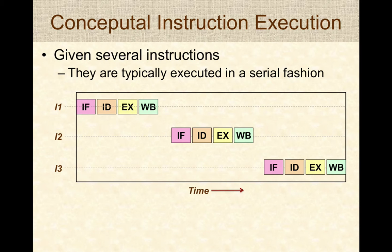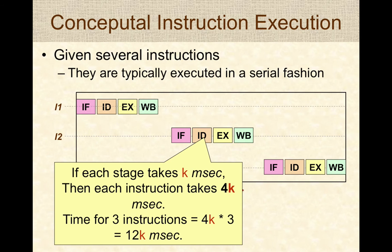If each stage takes k milliseconds — usually nanoseconds in practice — then each instruction takes about 4k time units to process, and the time taken for three instructions will be 12k milliseconds. This is basic math.